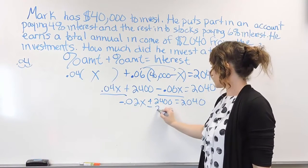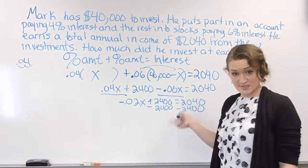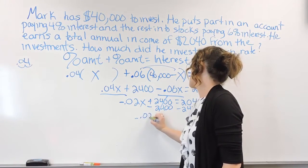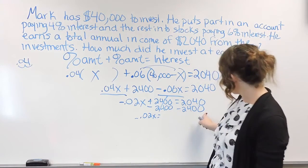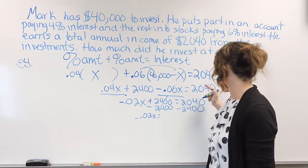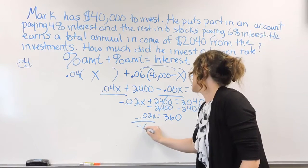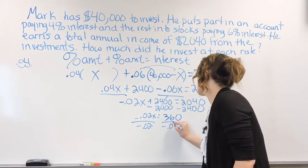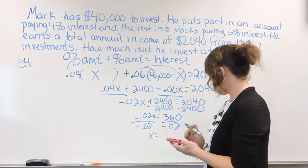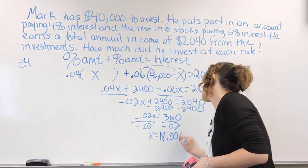X is on the left-hand side, so let's get our number to the other side. We subtract $2,400 from both sides. That cancels out on the left, and we're left with negative 0.02X equals $2,040 minus $2,400, which is negative $360. Dividing both sides by negative 0.02, X equals $18,000.